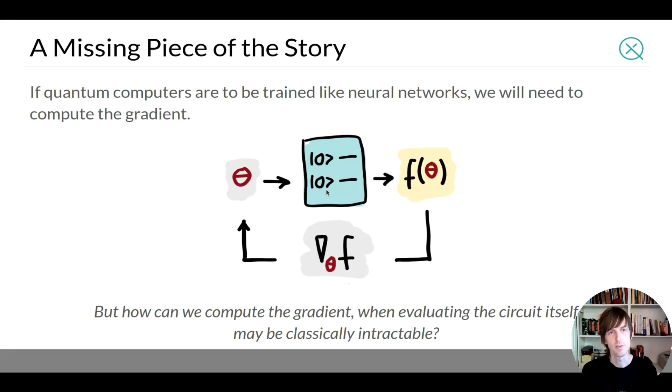So that's the story so far. It's pretty cool. It says that the ideas of deep learning are very nicely ported over to quantum circuits. But there's still a missing piece of this story that I haven't really explained yet, which is if we want to train quantum computers like neural networks, we want to use gradient descent, we need a way to compute the gradient.